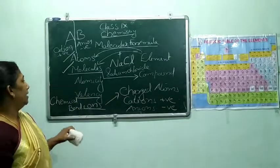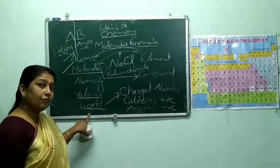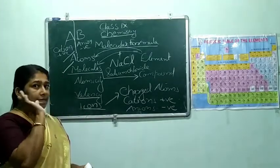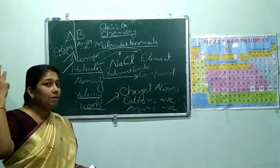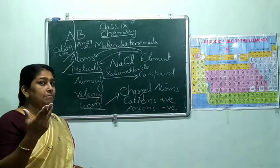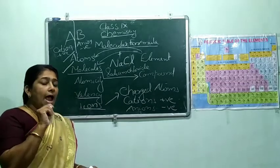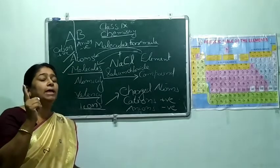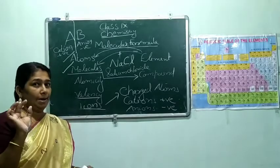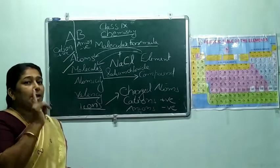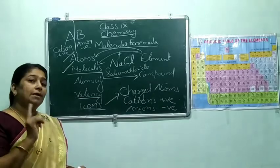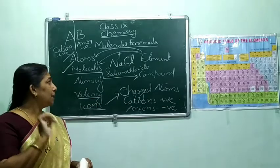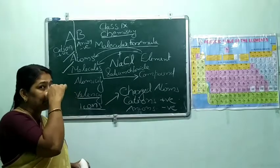How are ions formed? Either by losing or by gaining electrons. What is atomic number? We are recalling from our fourth chapter — structure of atoms. Atoms are electrically neutral. The number of protons inside the nucleus, or the number of electrons revolving around the nucleus, is known as atomic number — that is the identity card for each element. What is mass number? The sum total of protons and neutrons inside the nucleus.